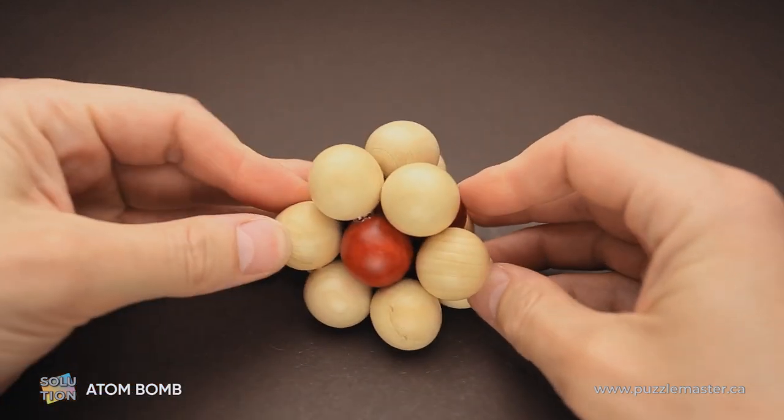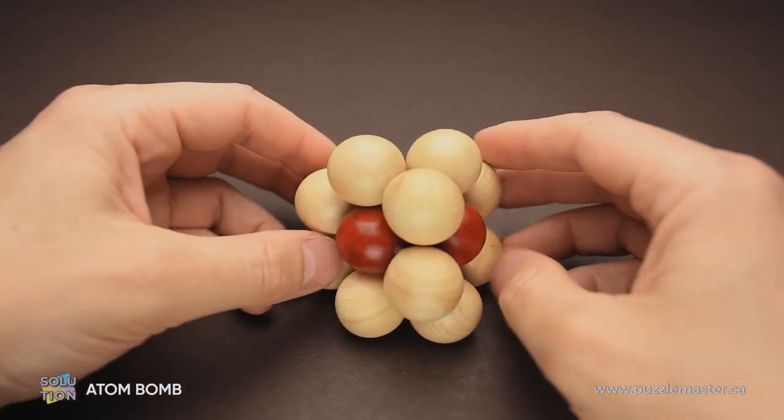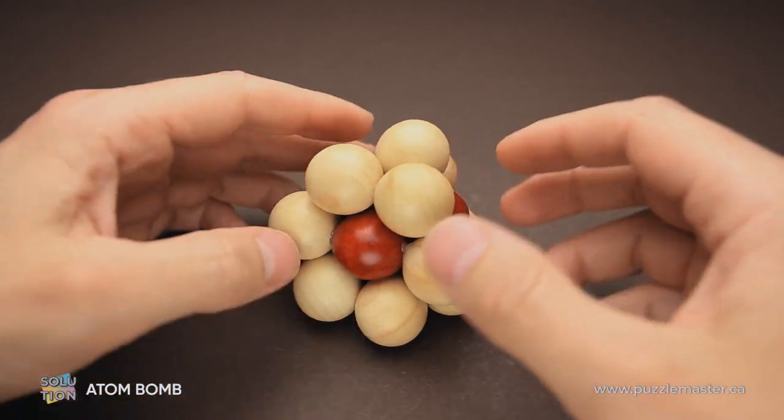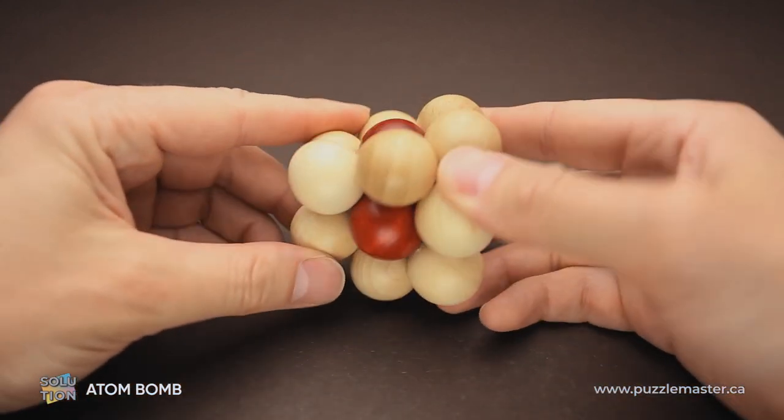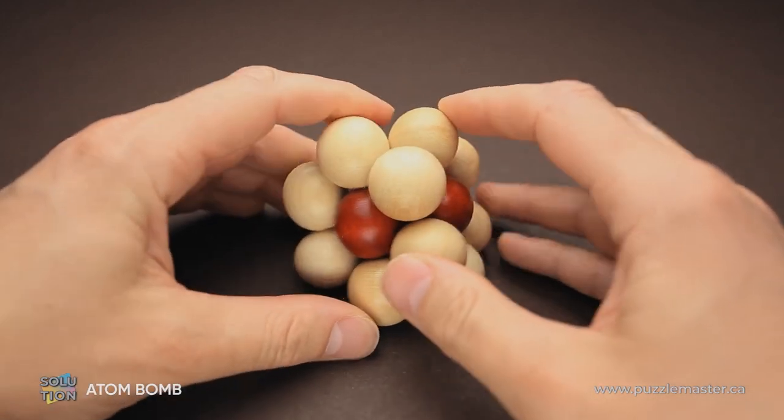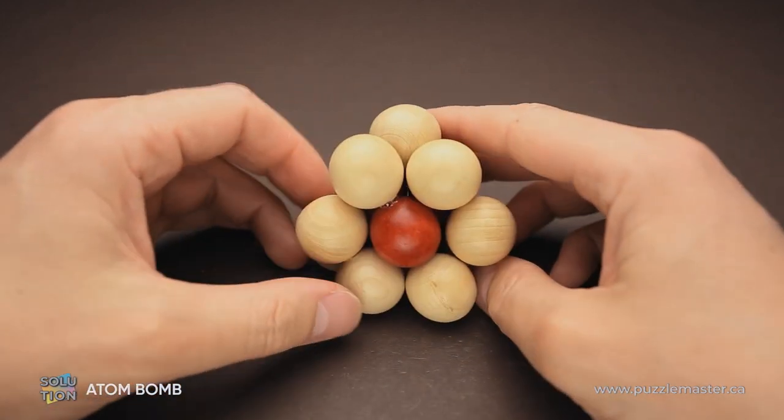And the puzzle is solved. As you can see, we have the shape that we saw from the start, where there is a red ball on each side in the middle. And we have this shape.